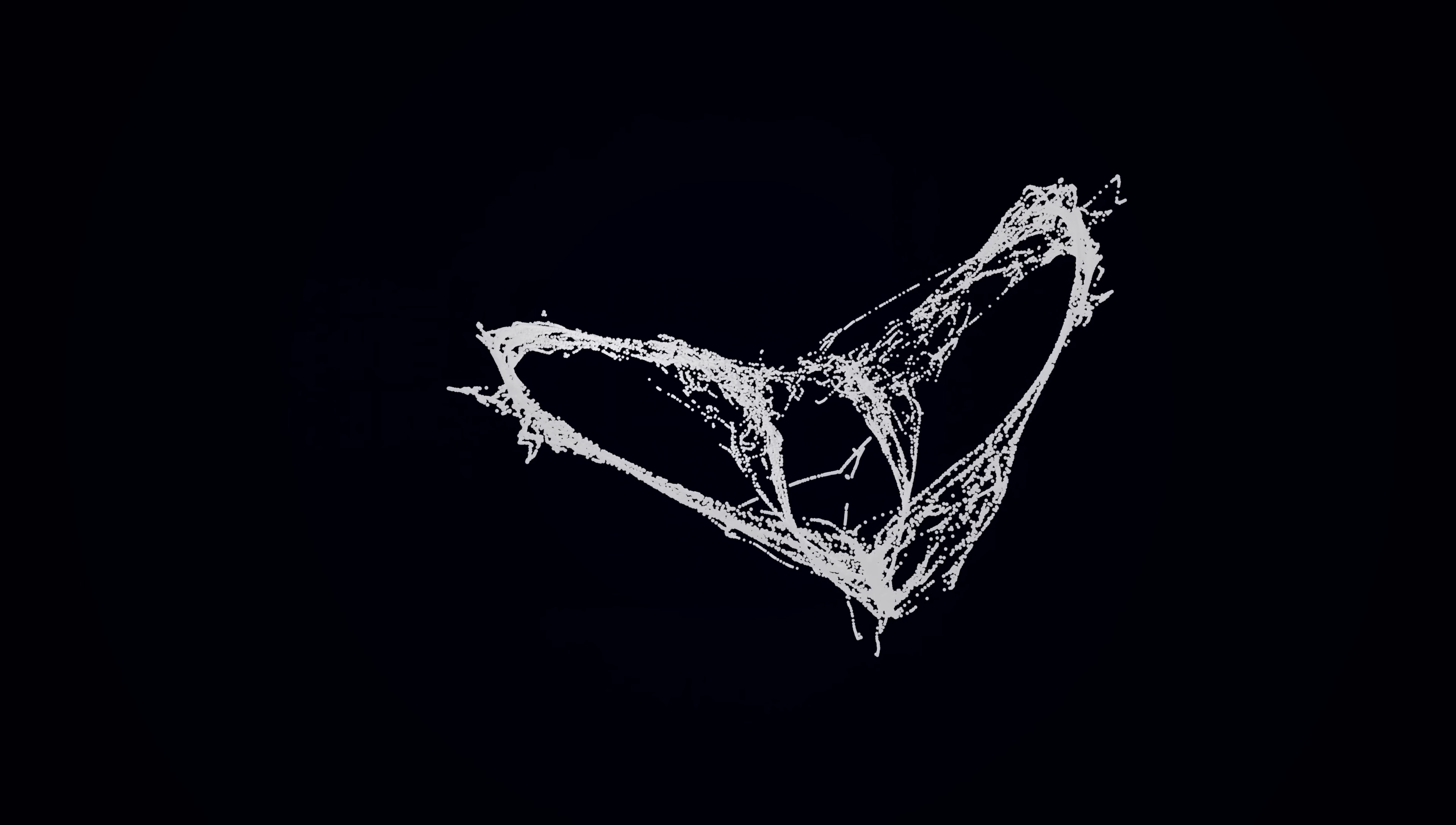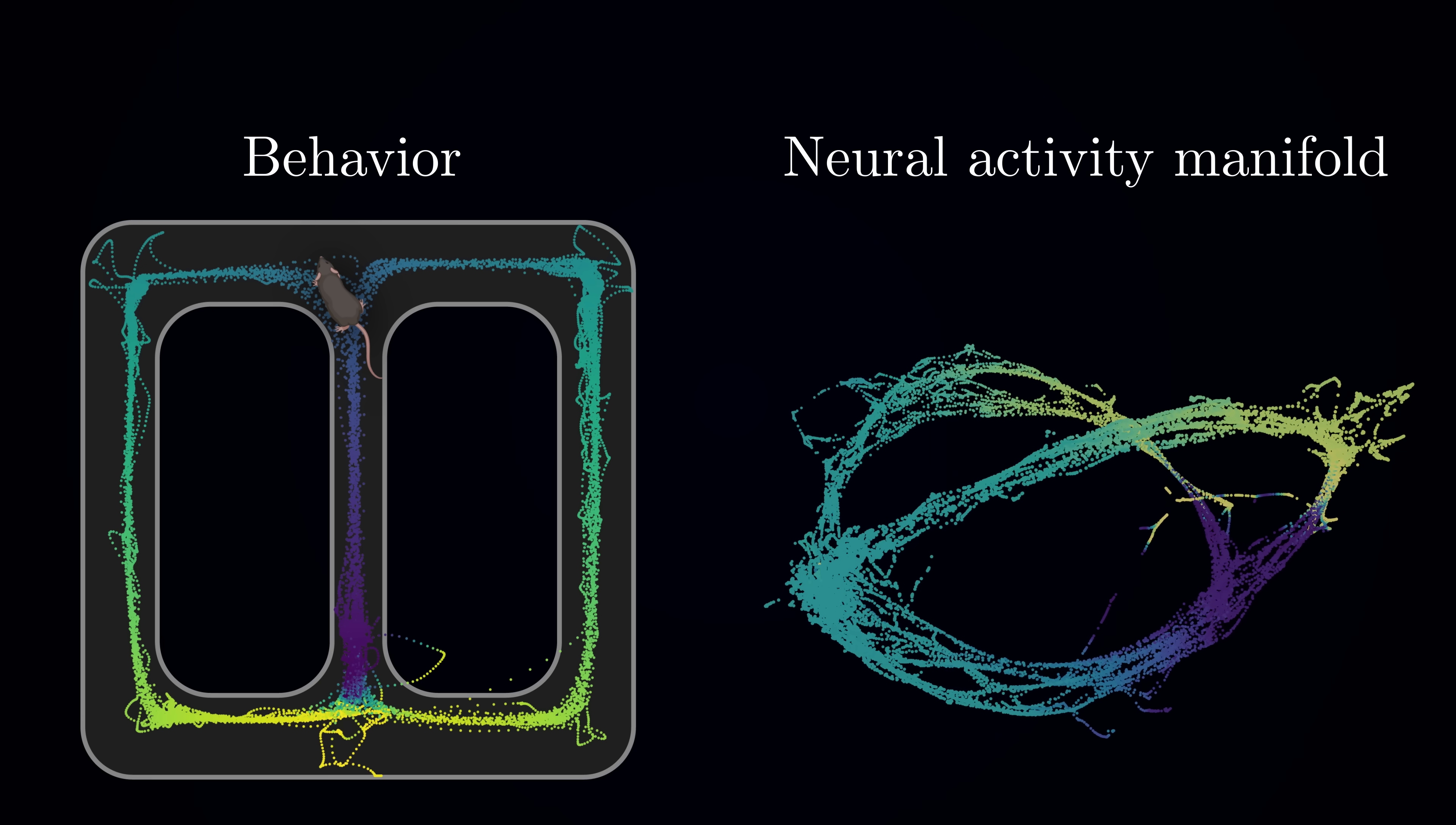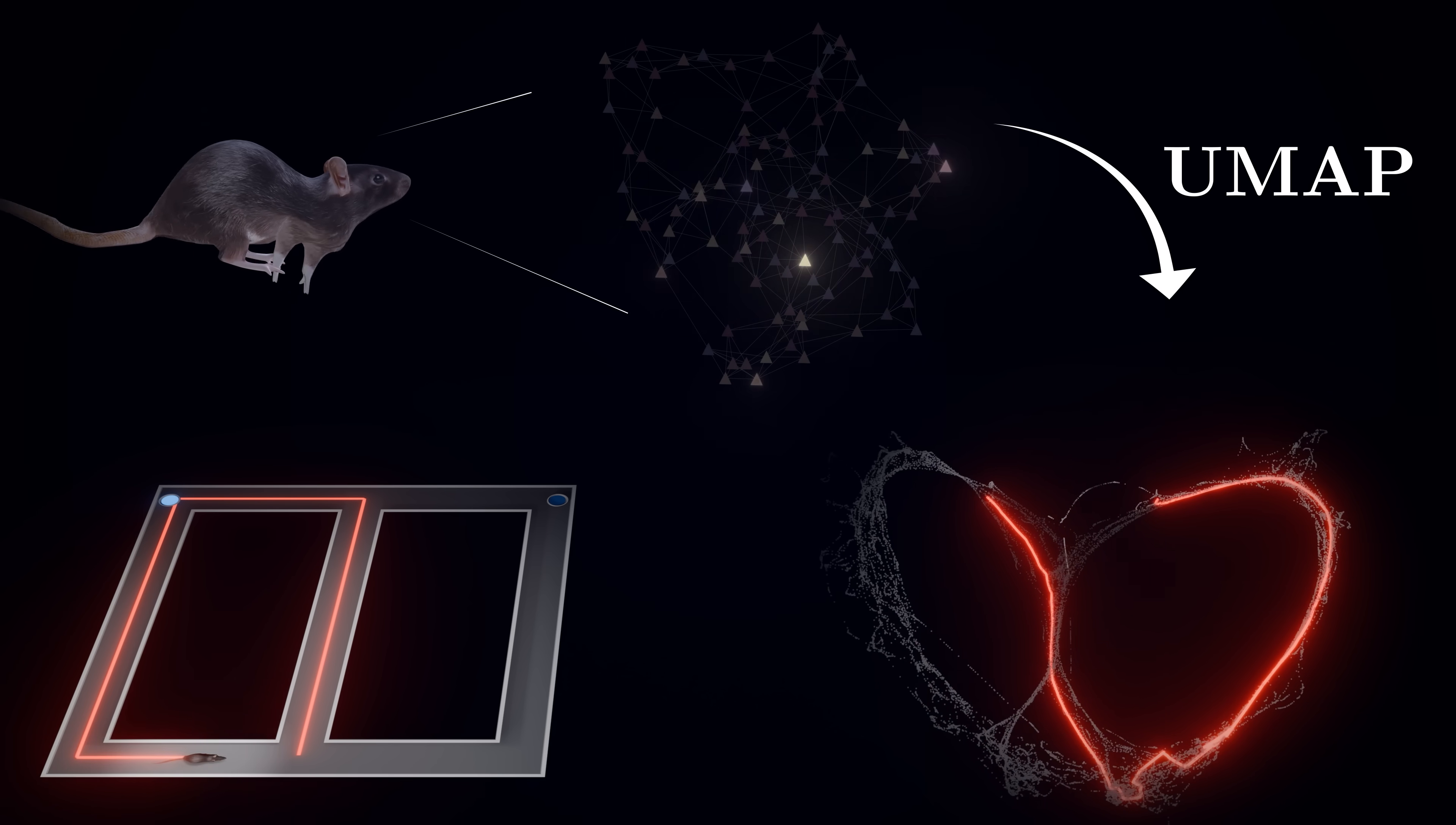When applied to the hippocampal data, UMAP reveals something remarkable – a looped structure that perfectly mirrors the layout of the figure-8 maze. When we color each point based on where the animal was physically located in the maze when that neural activity pattern occurred, we see an exact correspondence. What makes this particularly striking is that UMAP discovered the structure purely from neural activity, without any information about the animal's actual position.